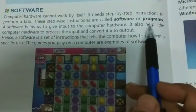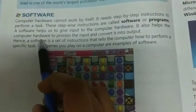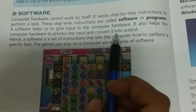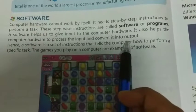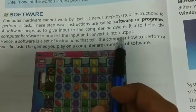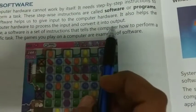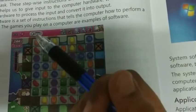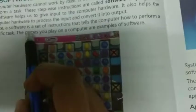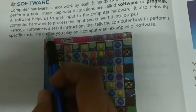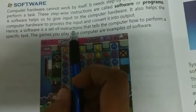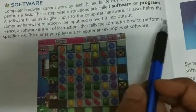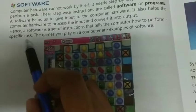It also helps the computer hardware to process the input and convert it into output. Hence, a software is a set of instructions that tells the computer how to perform a specific task.